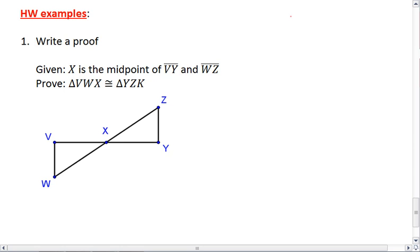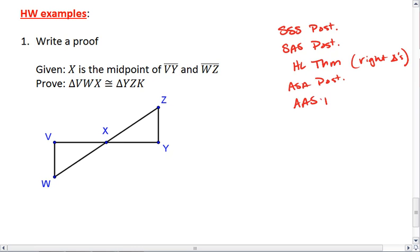And just to help you, remember we now have five ways to prove triangles congruent: the side, side, side postulate; the side, angle, side postulate; the hypotenuse leg theorem, which is only for right triangles; the angle, side, angle postulate; and the angle, angle, side theorem.